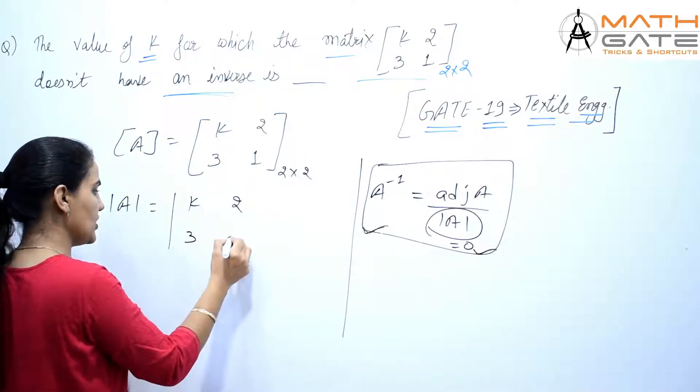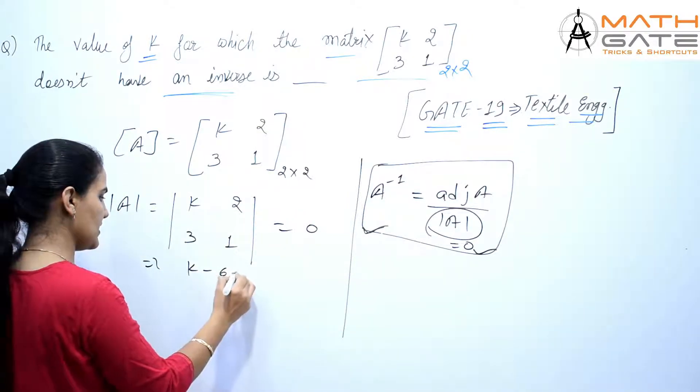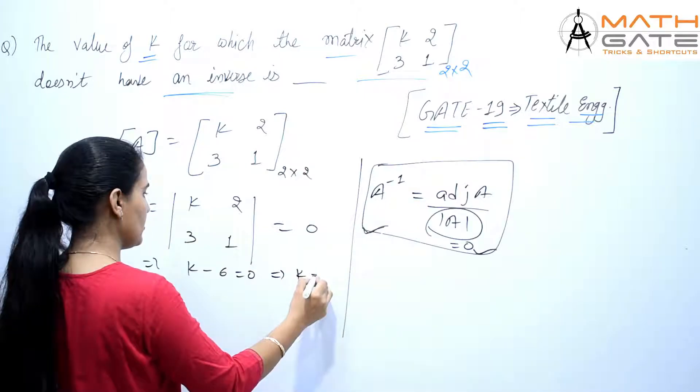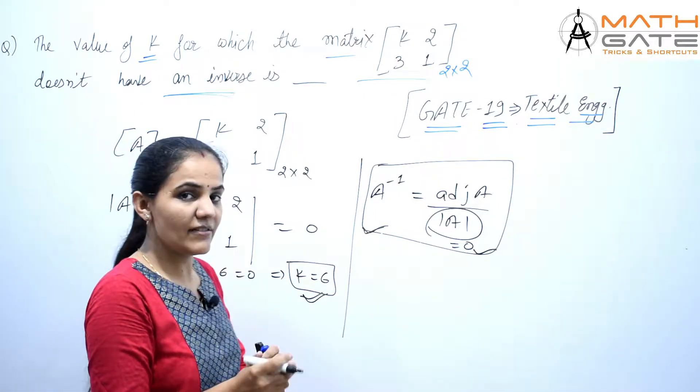The determinant becomes k×1 - 2×3 = 0, which equals k - 6 = 0, therefore k = 6. This means if k equals 6, this matrix's inverse will never exist.